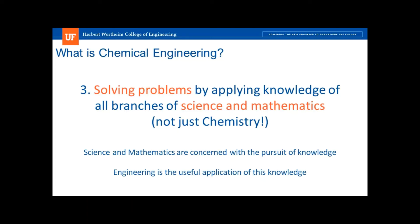One of the biggest misconceptions I notice is that chemical engineering is the same thing as chemistry. From my own recollection of the prereqs for engineering, Gen Chem and Orgo are two of the most polarizing. I've noticed that some students declare chemical engineering because of positive experiences with chemistry, while some bright students unfortunately stay away from chemical engineering because of neutral or negative experiences with organic chemistry. If this sounds familiar, you should know that you are not alone. I personally struggled to understand organic chemistry at first, and I was pleased to discover that chemical engineering is equal parts biology, physics, and calculus.